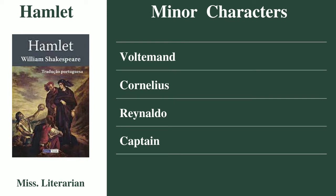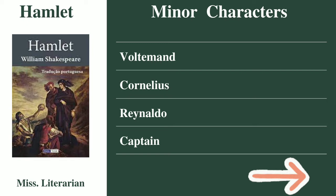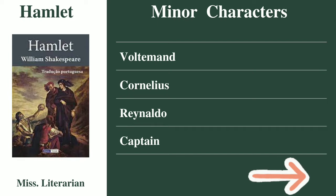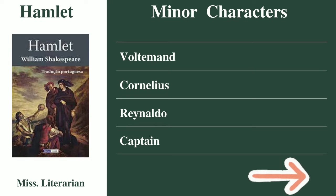This play has 5 acts. Act 1 has 5 scenes, Act 2 has 2 scenes, Act 3 has 4 scenes, Act 4 has 7 scenes, and Act 5 has 2 scenes. This discussion delivers the whole summary of the play.